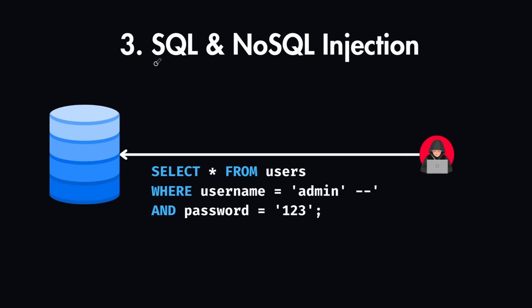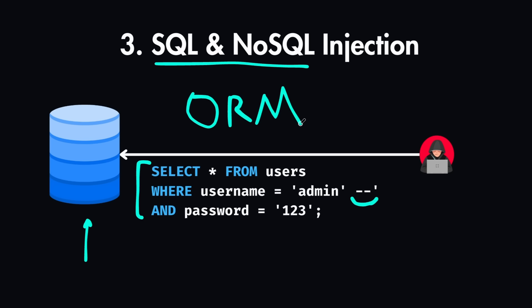The third technique is SQL and NoSQL injections. Injection attacks happen when user input is directly included in a database query. An attacker can modify it and send queries to read or delete your data. For example, a crafted input can bypass checks entirely and allow the attacker to read, modify, or delete all user data and any other tables in the database. To fix this, always use parameterized queries or ORM safeguards.